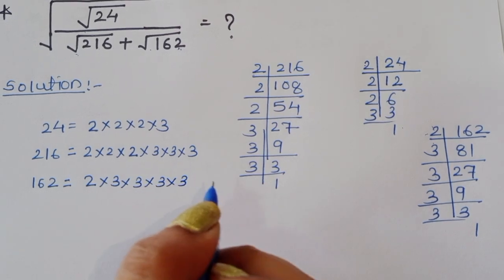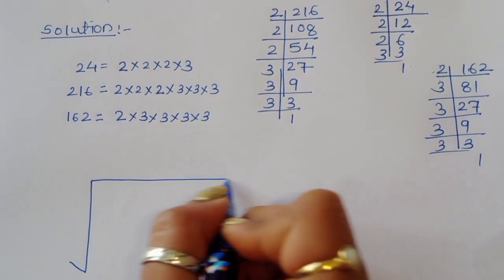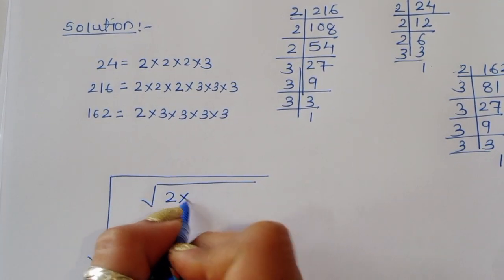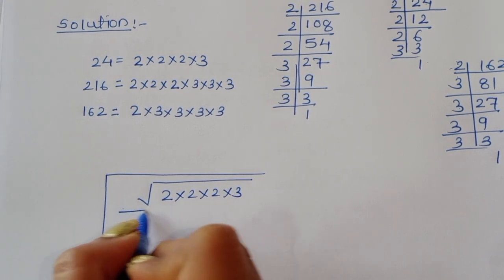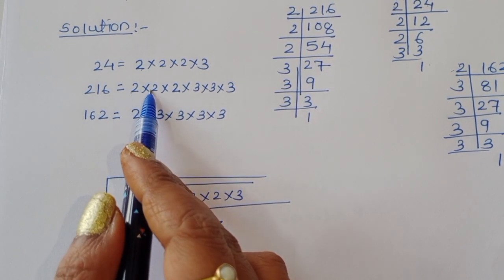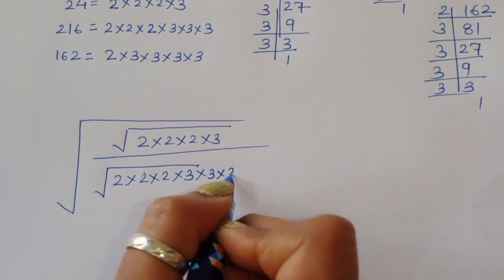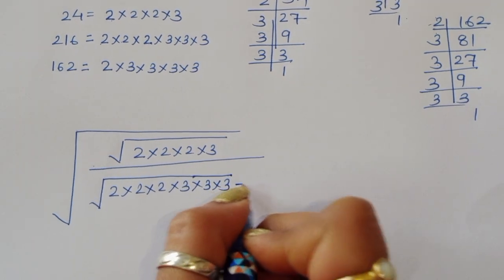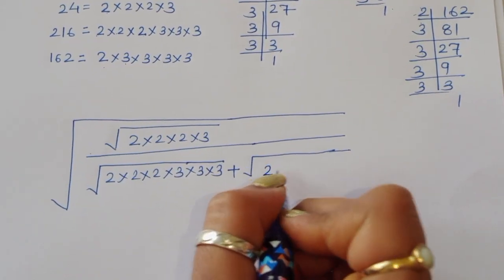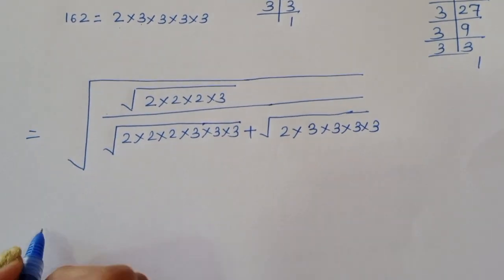Now we substitute these values. Square root of 24 is square root of 2 times 2 times 2 times 3. Divided by square root of 216, which is 2 times 2 times 2 times 3 times 3 times 3. Plus square root of 162, which is 2 times 3 times 3 times 3 times 3.